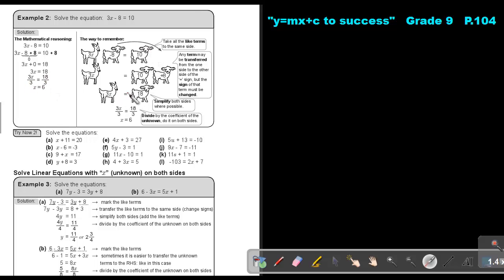But you can remember it this way. Take all the like terms to the same side. Can you see? There's a constant, there's a constant. So see it as sheep. And there's a goat. So this sheep must go to this scroll. Any term may be transferred from the one side to the other side of the equal sign. But the sign of the term must change. So as soon as this negative 8 jumps over the equal sign, it will become a positive 8. So 10 plus 8, that will be 18.